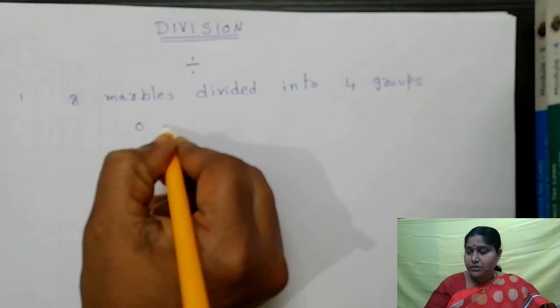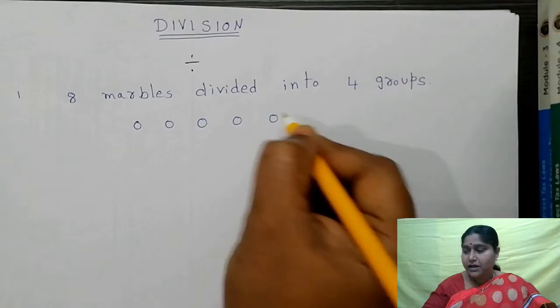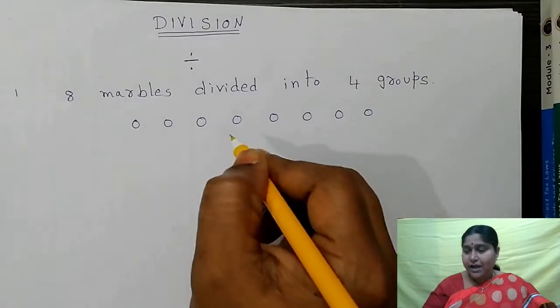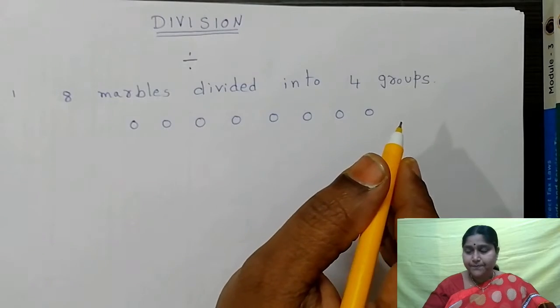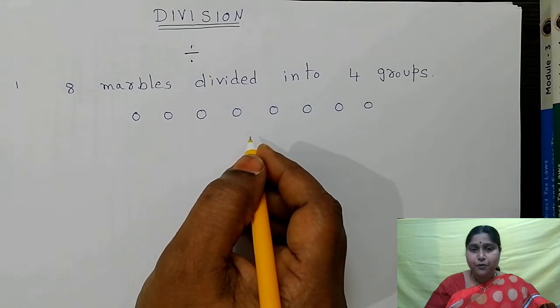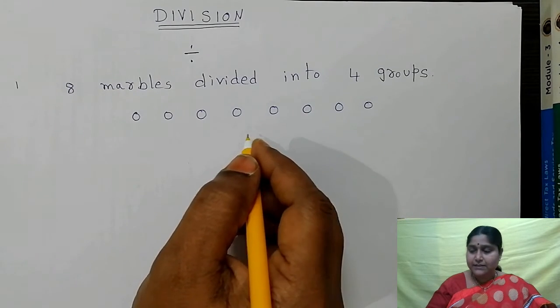1, 2, 3, 4, 5, 6, 7, 8. I have 8 marbles. Now I divided these 8 marbles into 4 groups. Four groups means you should draw 4 boxes.